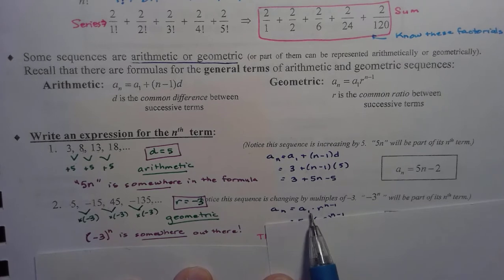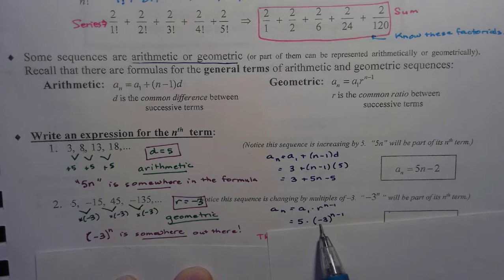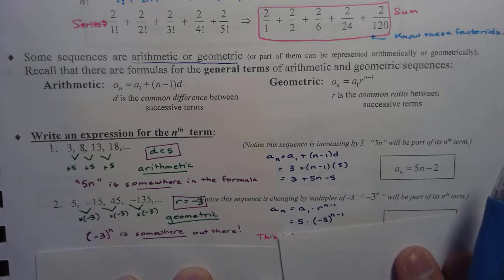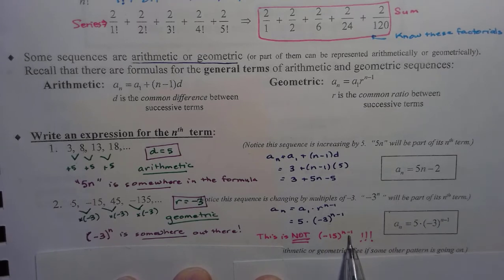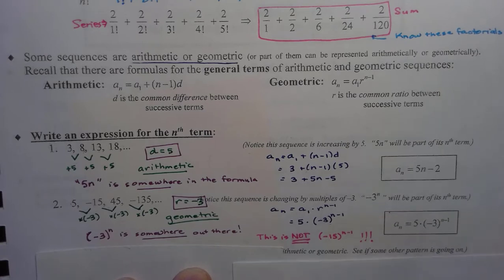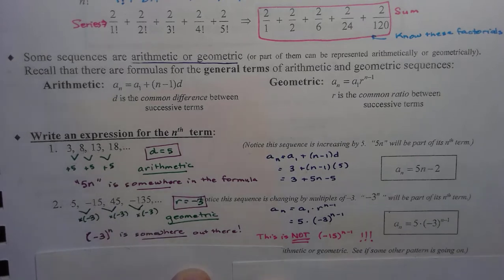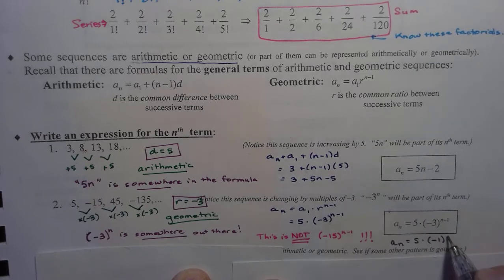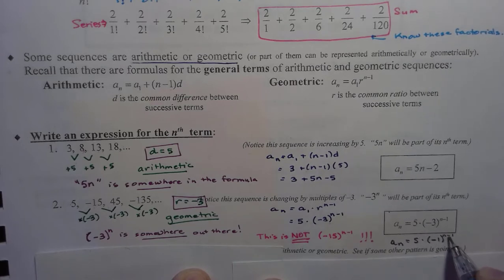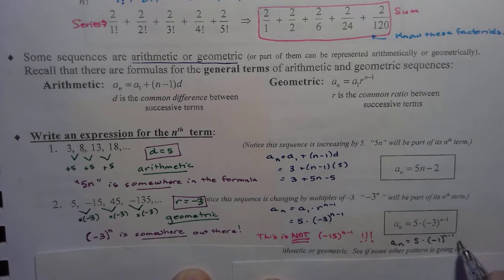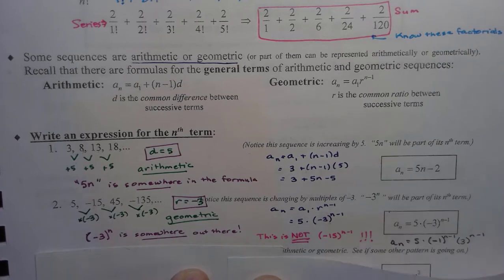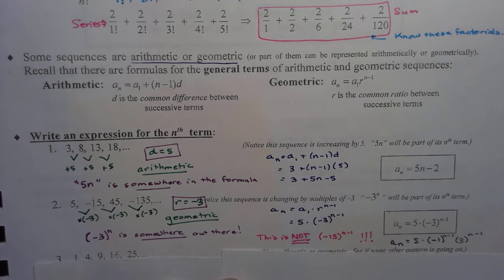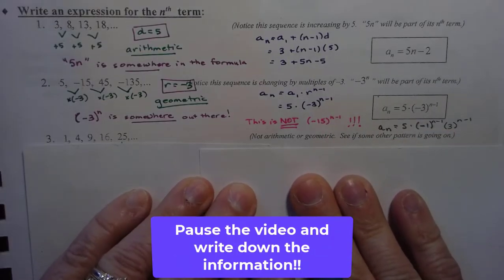So A sub n equals A sub 1 times r to the n minus 1. Remember to put parentheses around that common ratio — very important notation. This is not negative 15 to the n minus 1; I cannot multiply those together. So I have A sub n equals 5 times negative 3 to the n minus 1. You can do a bit more with this: the even terms have a negative sign, so we could write this as 5 times negative 1 to the n minus 1 times 3 to the n minus 1. Take a moment to write down what you have here.